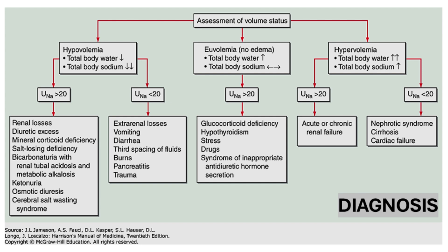Urine osmolality can provide further diagnostic clues. A urine osmolality of less than 100 mEq per kilogram suggests excessive water intake or polydipsia, or in rare cases, insufficient solute intake. A urine osmolality greater than 400 mEq per kilogram indicates that excess antidiuretic hormone may be a significant contributing factor. Intermediate values often point to a multifactorial cause. Finally, it is essential to assess thyroid, adrenal, and pituitary function if clinically indicated, as disorders of these organs can also contribute to hyponatremia.